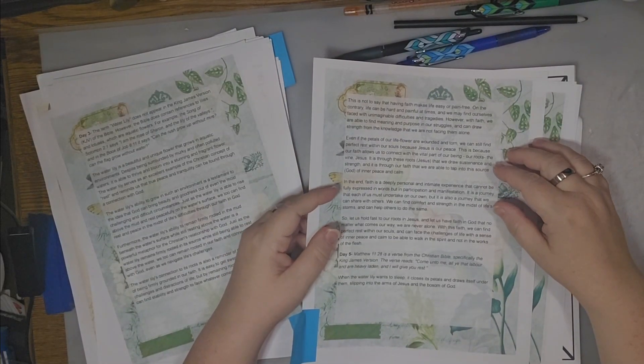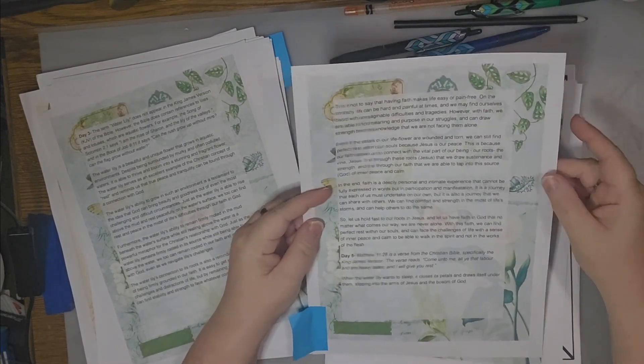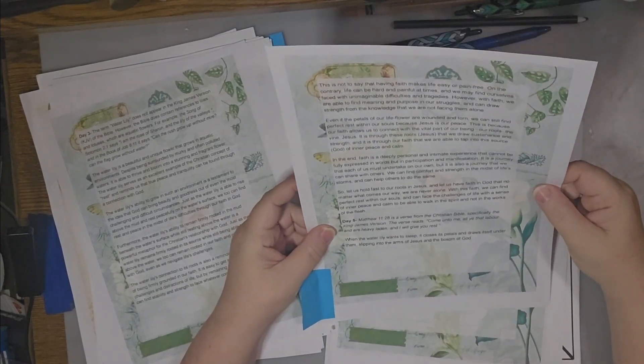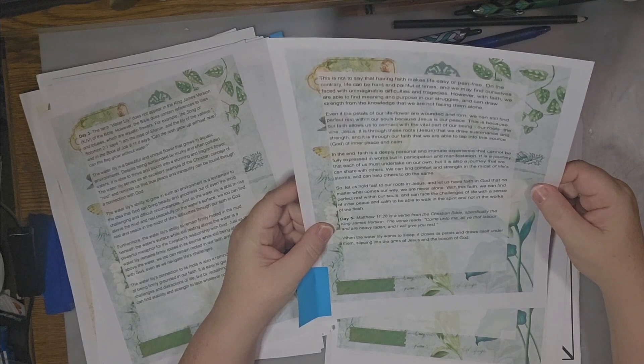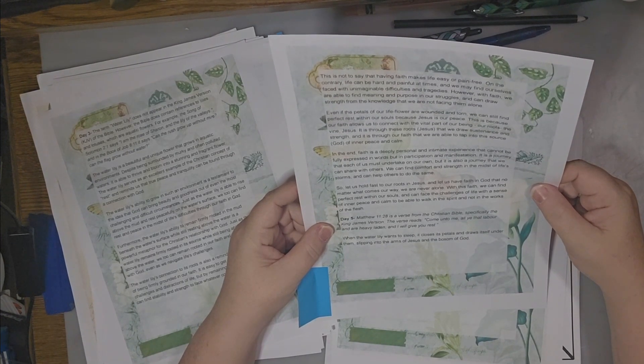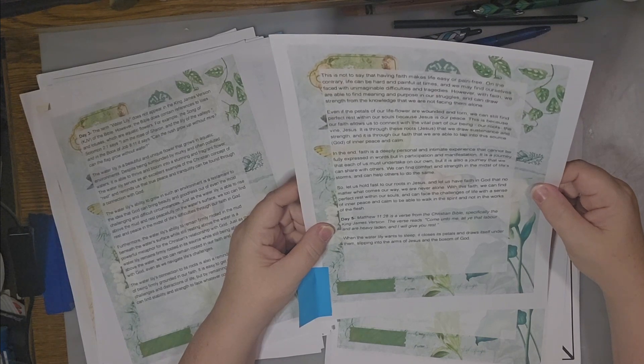Hello everyone, welcome to week 2, day 5 of Meeting God in the Garden. Day 5 scripture is Matthew 11:28. It is a verse from the Christian Bible. The verse reads, Come unto me, all you that labor and are heavy laden, and I will give you rest.